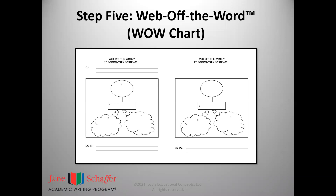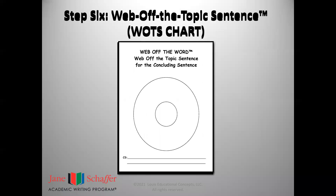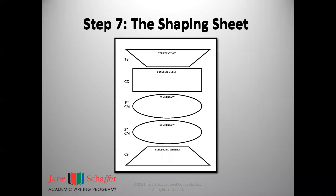Jane's WOW chart is the path to analytical success through critical thinking and vocabulary development. The paragraph ends with students developing a concluding sentence. Students learn how to web off the topic sentence to compose an effective closing to a strong paragraph. Once a writer develops the first draft body paragraph, the next step is to move and improve the writing to the shaping sheet. Here, the concentration is on editing, revising, and proofing.